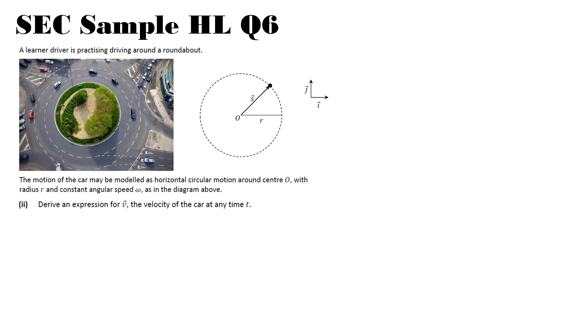So part two then says, derive an expression for V, the velocity of the car at any time T. So we have from part one, we have already worked out that we have R cos omega t i plus R sine omega t j. From our knowledge of distance, time and rates of change, we should know that velocity is the rate of change of displacement with respect to time. So what we're being asked to do is differentiate this vector with respect to time.